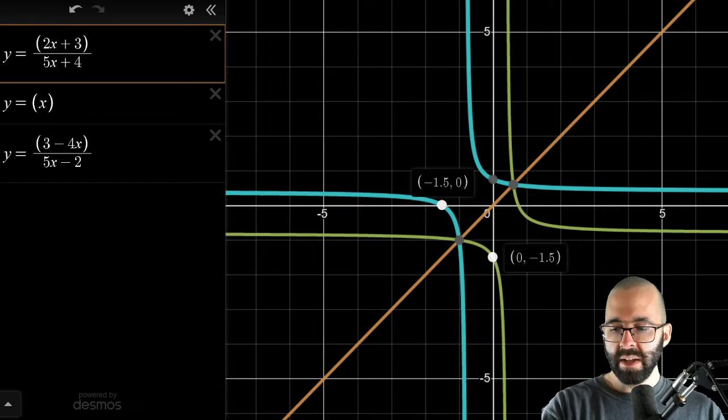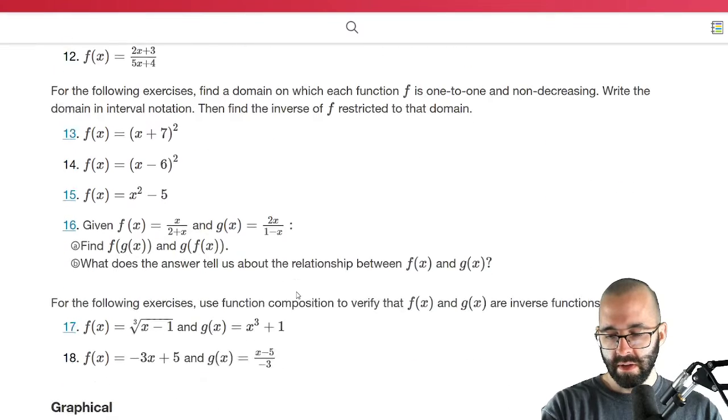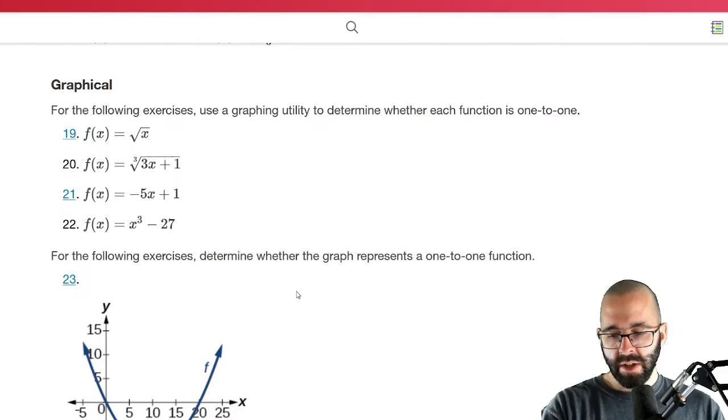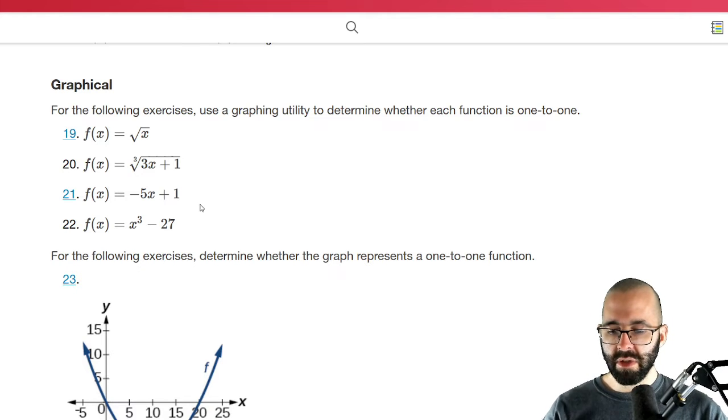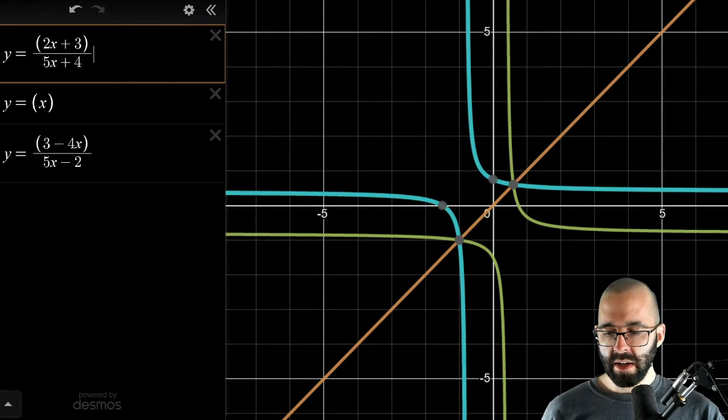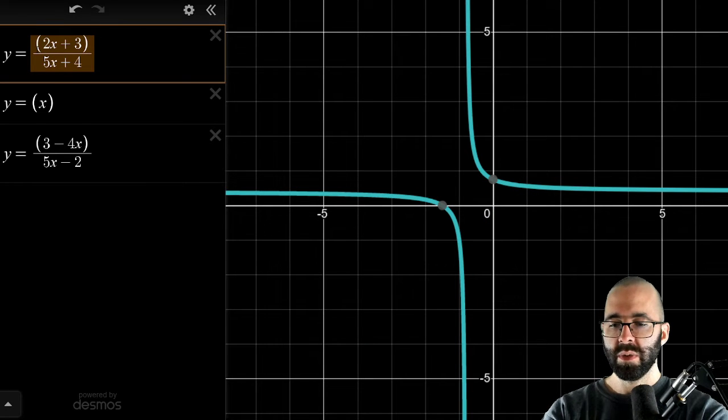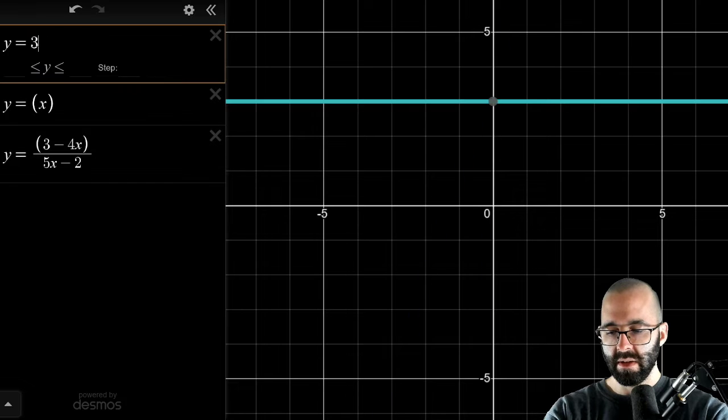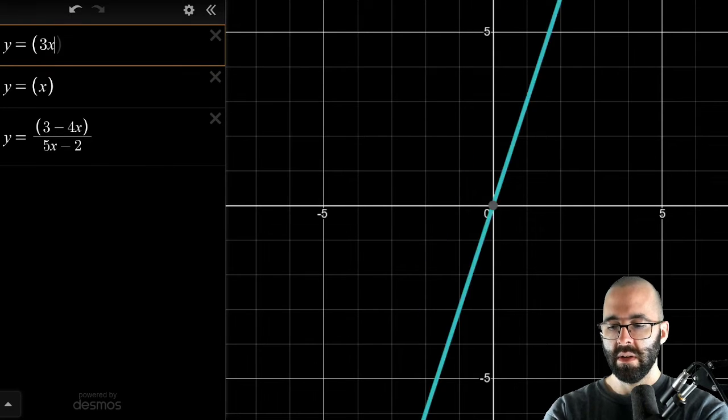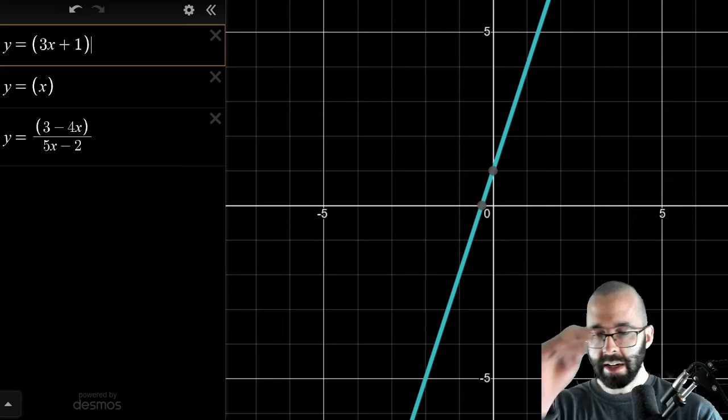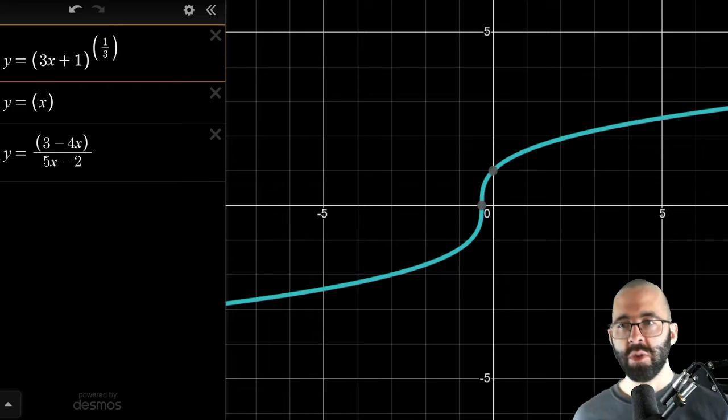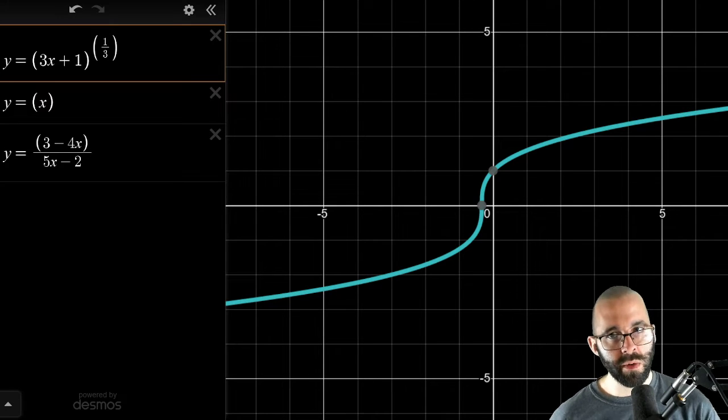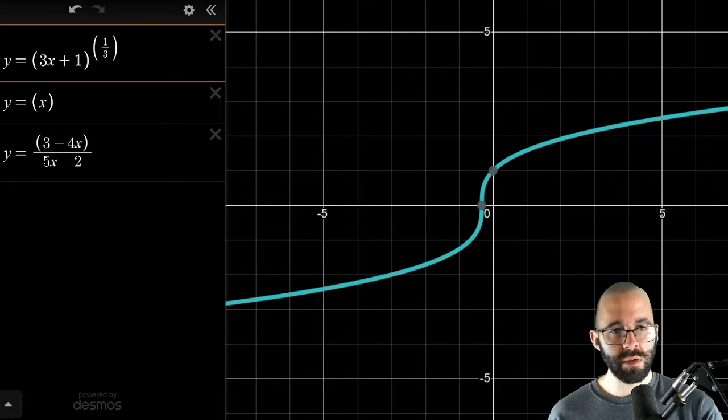Let's do another one. Number 20. Number 20 says use a graphing utility to determine whether each function is one-to-one. We want to graph the cubed root of three X plus one. I think on Desmos, it's a lot easier to graph cubed roots by using exponents of one third. Remember, an exponent of one half is the same as a square root, an exponent of one third is the same as a cubed root, and so on.